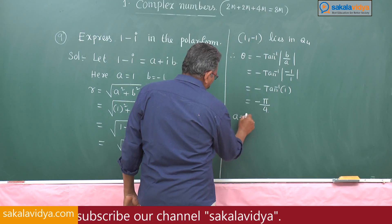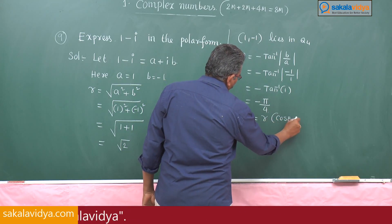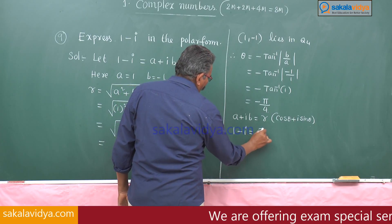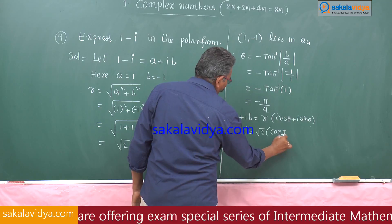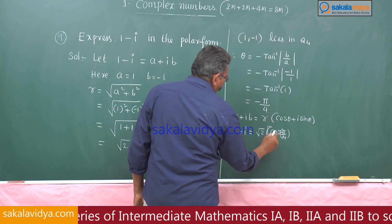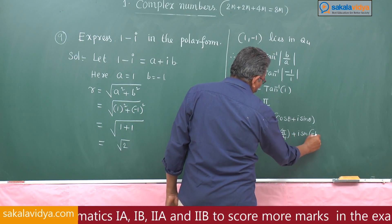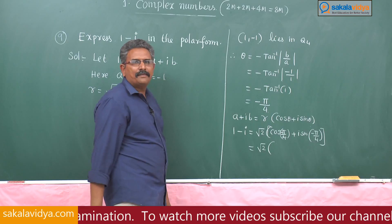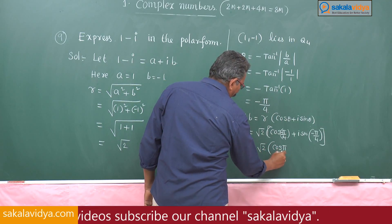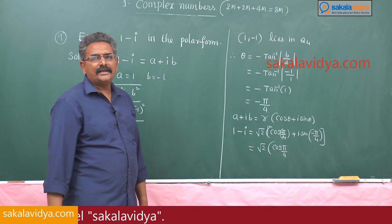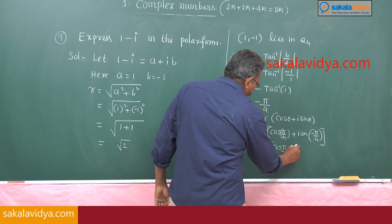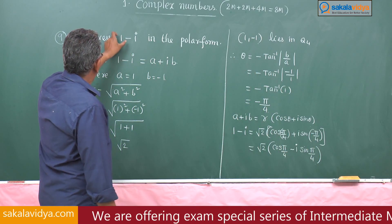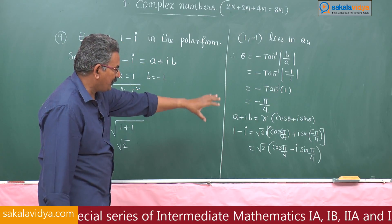Since a plus i b equals r times (cos theta plus i sin theta), therefore 1 minus i, with theta equal to minus pi by 4, equals root 2 times (cos pi by 4 minus i sin pi by 4).